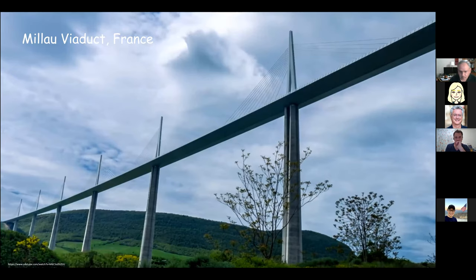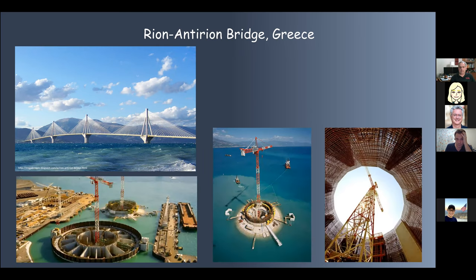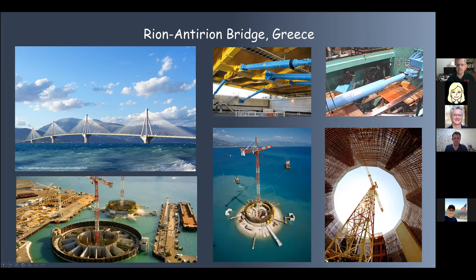Here's another cable-stayed bridge in Greece that crosses a seismic fault with difficult foundation conditions. These foundations were pre-tested — built in dry dock, then flooded and towed to position. Once in position, you let water in, air out, and the foundation sinks to finish the bridge construction. This bridge also had vibration control with dampers, just like your mountain bike, and those dampers were also tested in our labs.